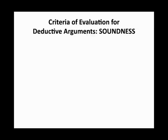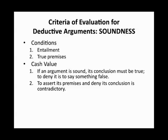The second criterion we examined for deductive arguments was soundness. There are two conditions that must be met for an argument to be sound: the aforementioned entailment and true premises. The cash value here is that if an argument is sound, its conclusion must be true — to deny it is to say something false. To assert its premises and deny its conclusion would be contradictory.